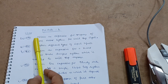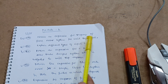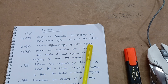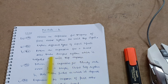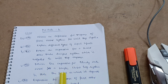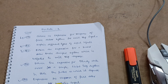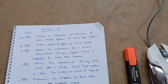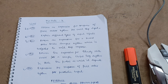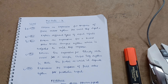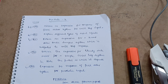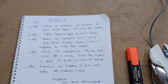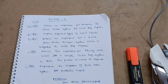In Module 2 there are some derivations. For example: obtain an expression for the response of a first order system for unit step input; explain different types of input signals; derive an expression for a second order underdamped system subjected to unit step response; derive the expression for steady state error for a simple closed loop system and state the factors on which it depends; and expression for response of first order system for parabolic input. Don't depend only on these derivations — sometimes there will be two problems in this module, so practice from previous three-year papers, at least one question from each paper, to learn how to calculate delay time and similar quantities.